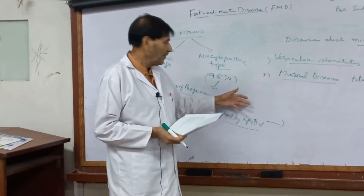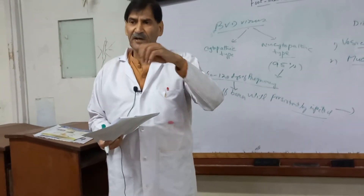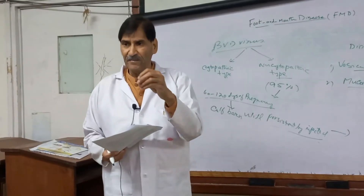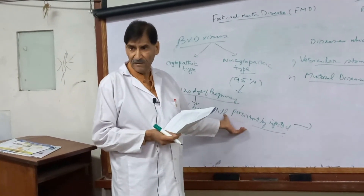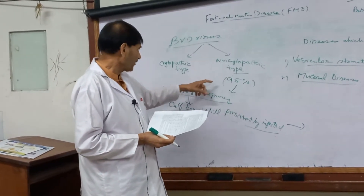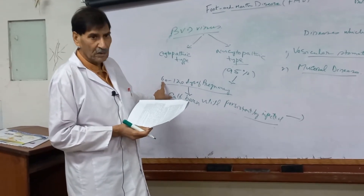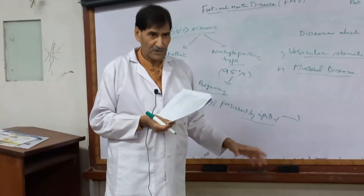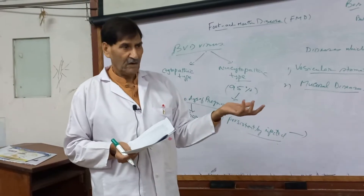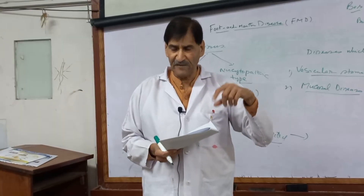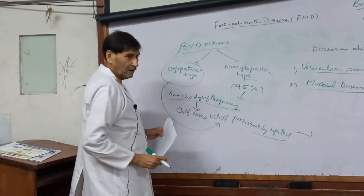If a persistently infected calf — say it is 6 months old and persistently infected — it will serve as a source of BVD virus for other animals. And if this persistently infected calf later gets infected with the Cytopathic BVD virus, this condition will be called Mucosal disease.